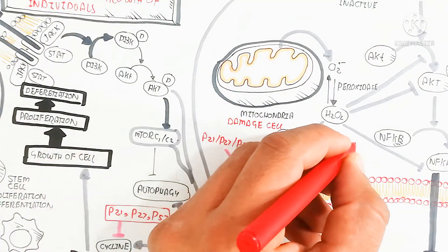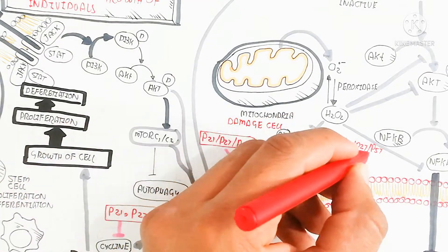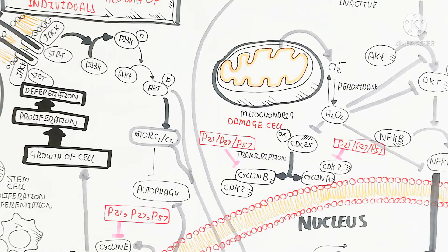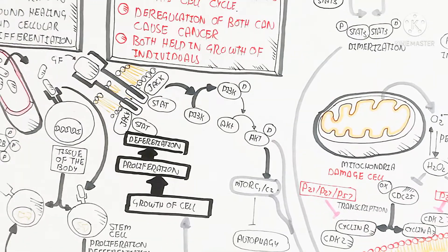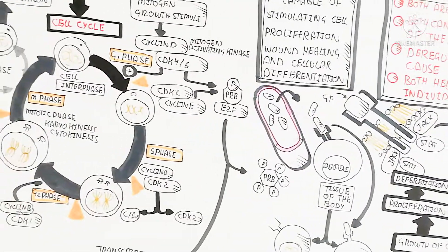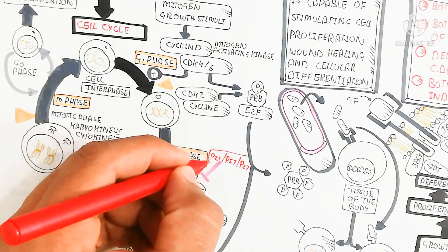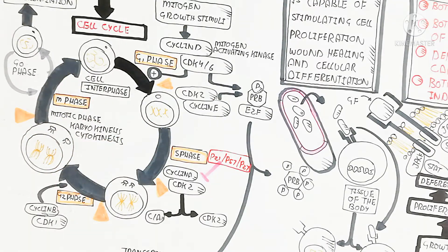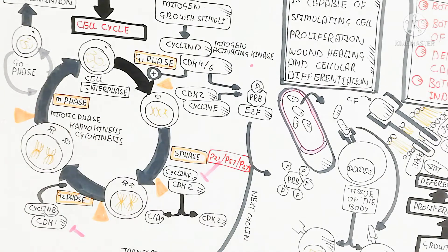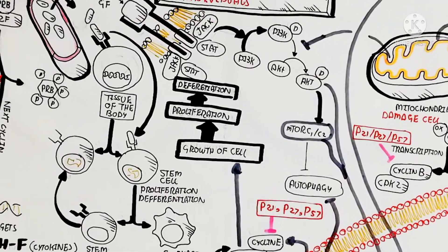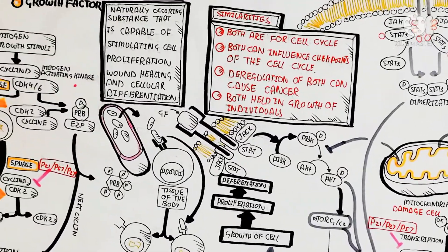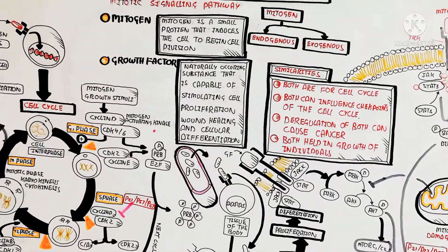Cyclin B inhibition arrests the G2 phase, while cyclin A inhibition arrests the S phase of the cell cycle. Inhibiting cyclin A blocks the S phase, and inhibiting cyclin B with CDK1 causes G2 phase arrest, completely stopping the cell and triggering apoptosis. In this way, proliferation of damaged cells is prevented and cancer is inhibited through this mechanism.